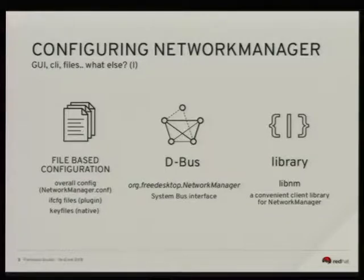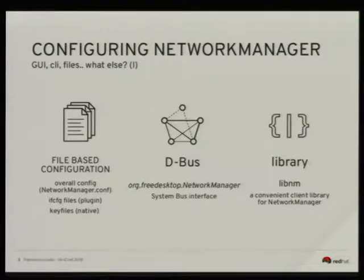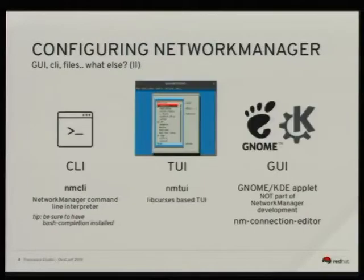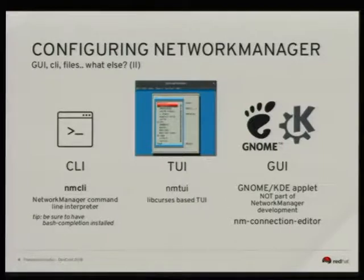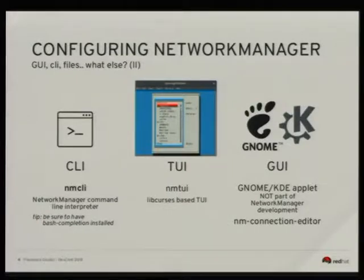In order to configure Network Manager there are many ways. There is file-based configuration, which is standard for daemons in Linux. You also have a D-bus interface, a library to access Network Manager configuration from your programs, and graphical user interfaces shipped from both main desktop environments — GNOME and KDE. There is also a text user interface. Today I would like to give you a few CLI commands, because this is the easiest and most powerful way to interact with it.